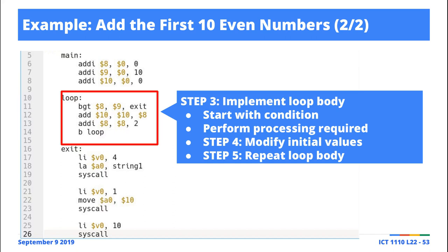Let's work through it. R8=0: is 0 > 10? No. Process: 0+0=0, sum is 0. Add 2 to R8, now R8=2. Loop again. R8=2: is 2 > 10? No. R10 has 0, R8 has 2, so 0+2=2, sum is 2. Add 2 to R8, R8=4. Loop again. R8=4: is 4 > 10? No. R10 has 2, R8 has 4, so 2+4=6, sum is 6.